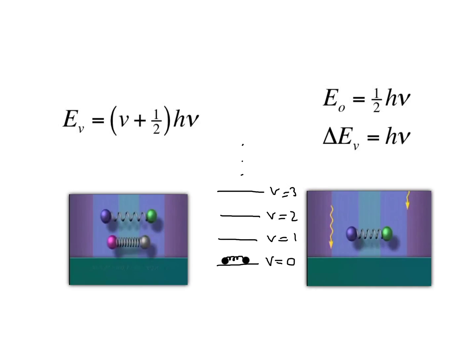Because the atoms at the ends of my spring are microscopic particles, I cannot describe this motion classically, and I have to use quantum mechanics.